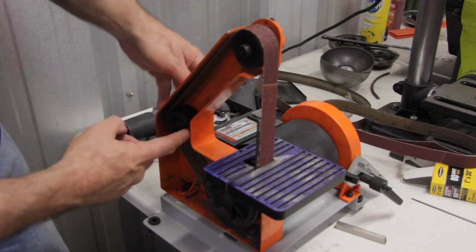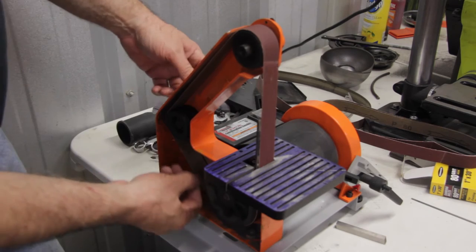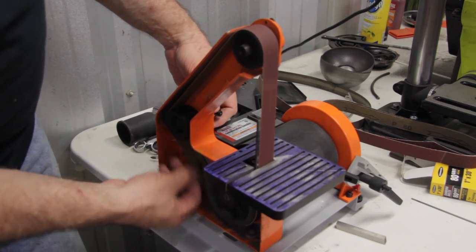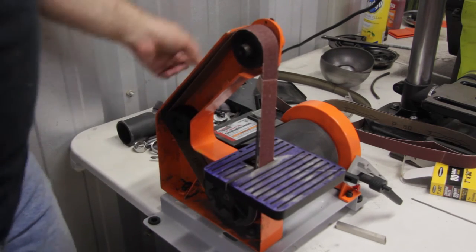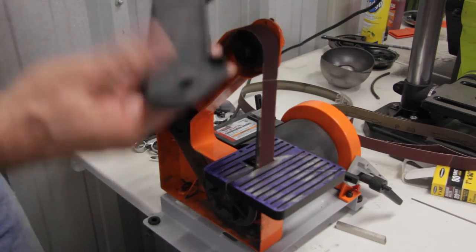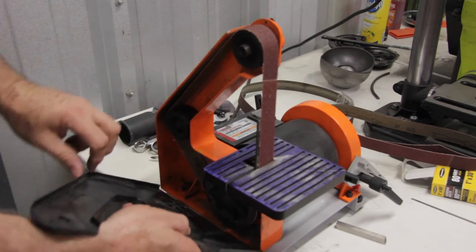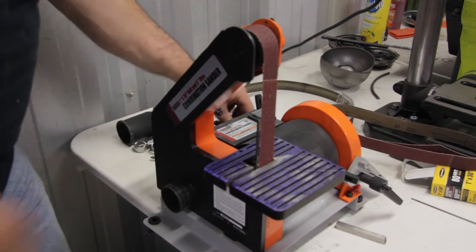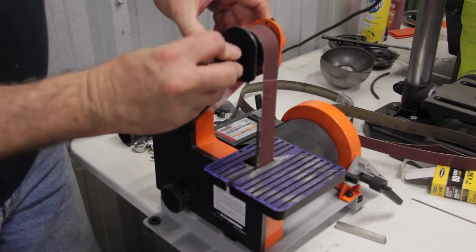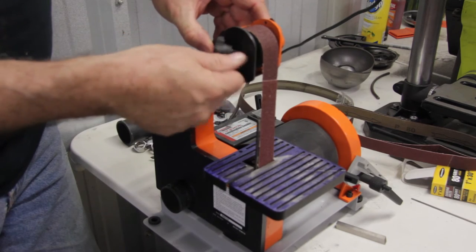Right before you put the cover back on you want to make sure that your belt tension is adjusted properly. You don't want it too loose but you don't want it too tight either. So take the cover, slip the two tabs at the very bottom in and pop it up over the thumb screw hole. Get your thumb screw and tighten that back up.